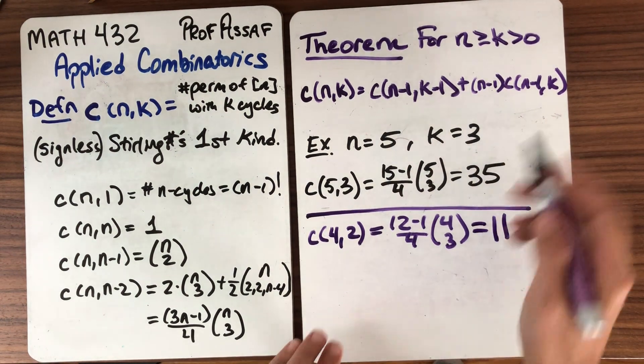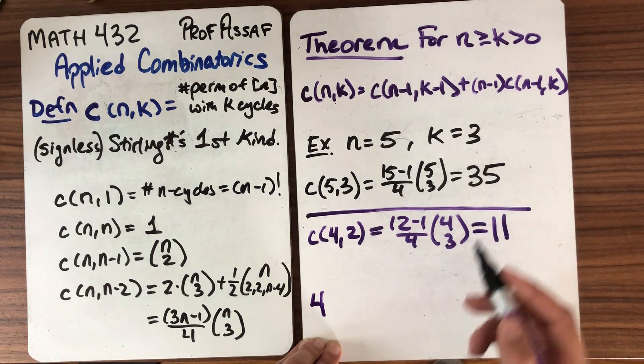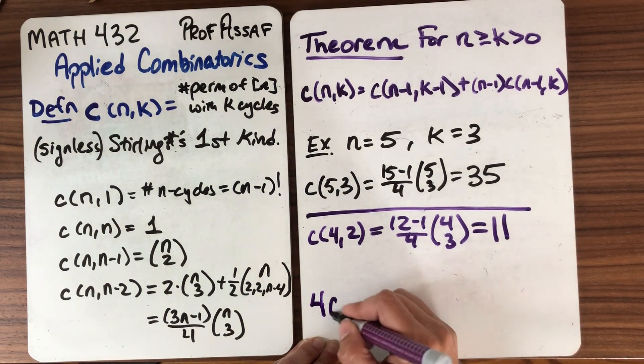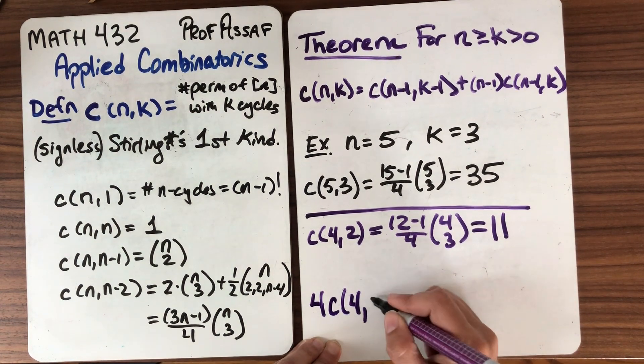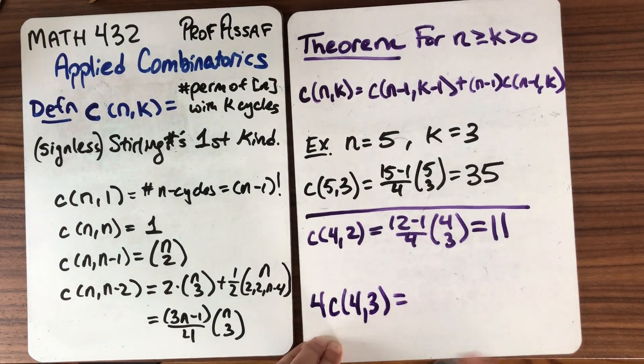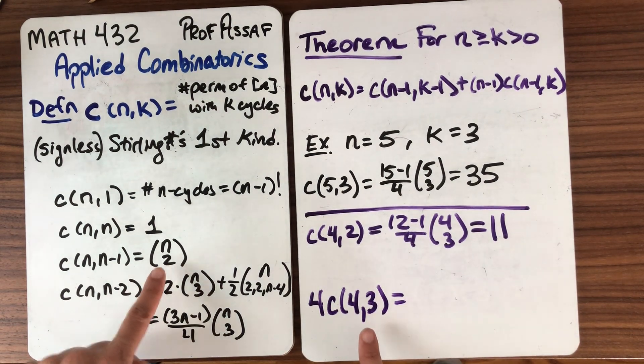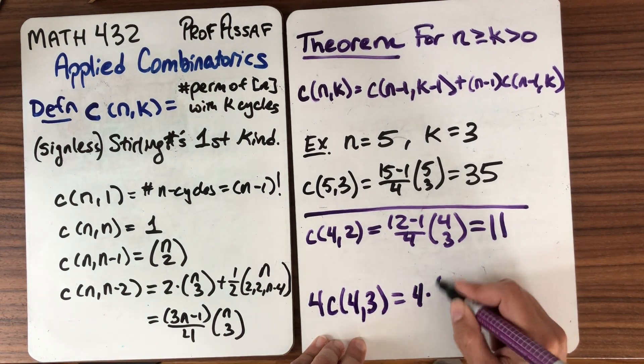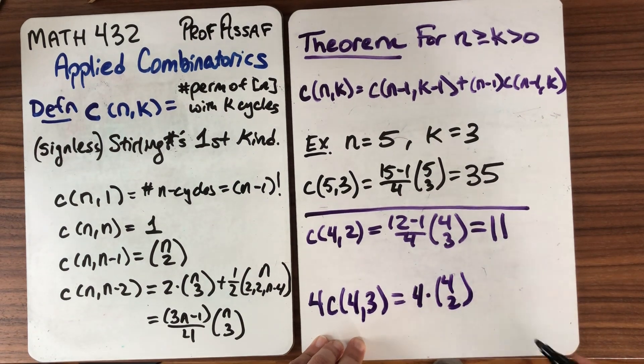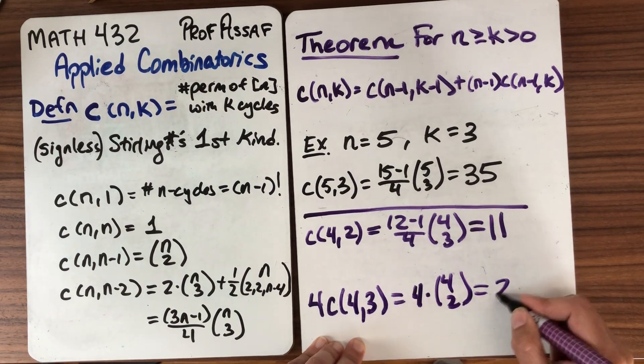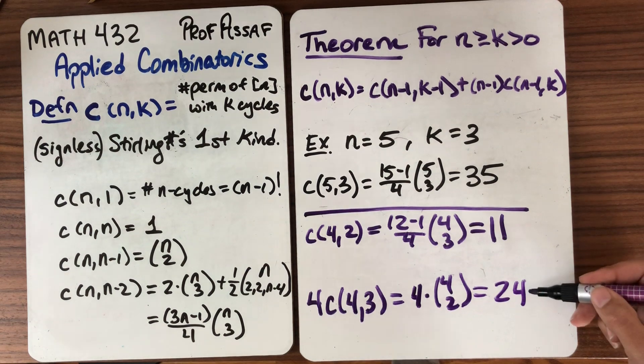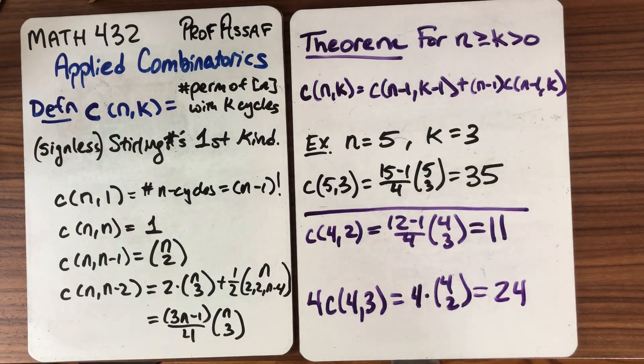And now over here, we have n minus 1. That's different. Last time it was k. This time it's n minus 1, which is 4 times c(n-1,k). So c(4,3), that's going to be this formula. So this is 4 times 4 choose 2. 4 choose 2 of course is 6. So we get 24. And in fact, 24 plus 11 is indeed 35. So we can see that the theorem is true in this case.